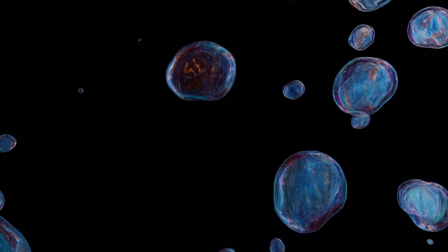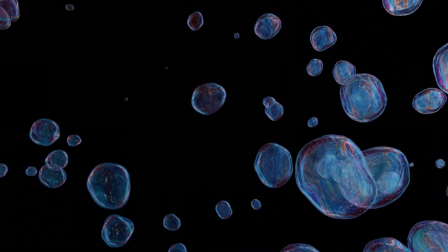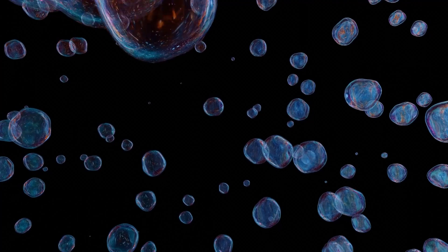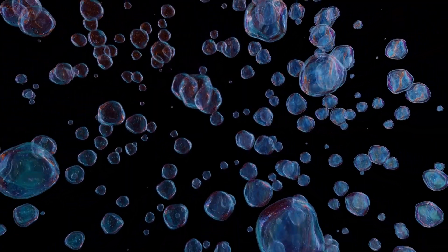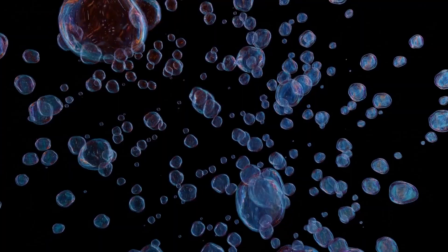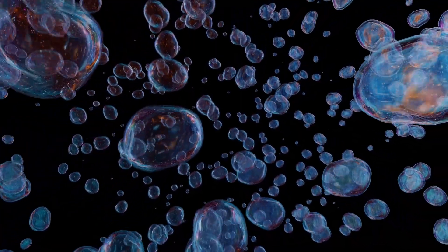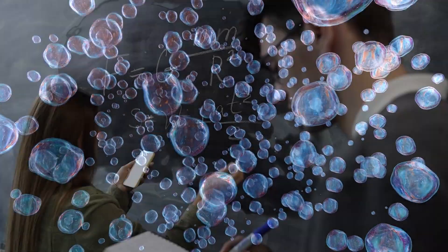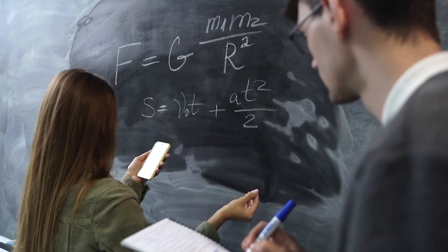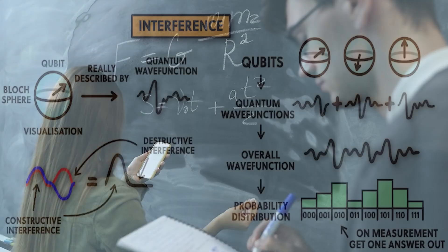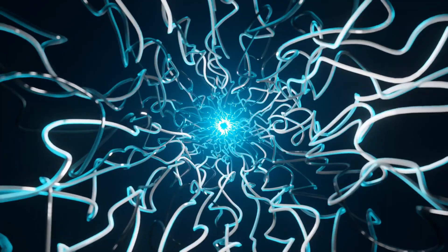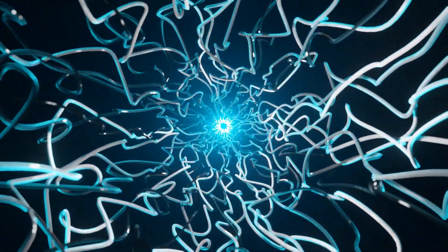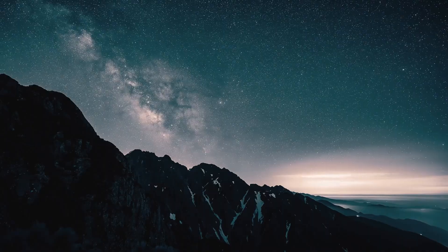If many worlds is true, it changes everything we think we know about existence. Every decision you make spawns countless versions of you. The universe itself becomes a vast branching tree of realities, each as real as the one you're experiencing now. Physicists are exploring whether future experiments, especially involving quantum computing and interference, might someday detect traces of these other branches. If that happens, the idea of a single unique universe will vanish forever.